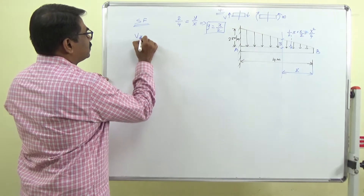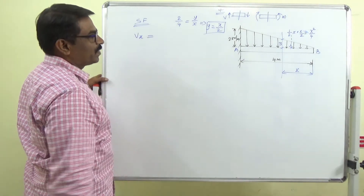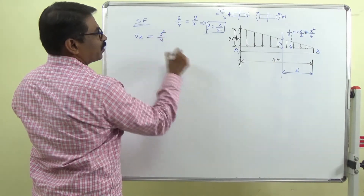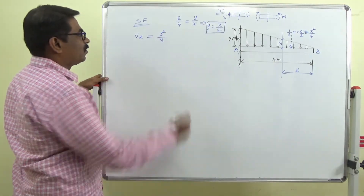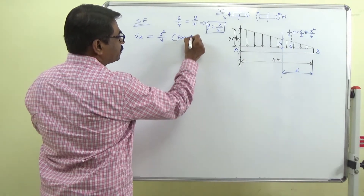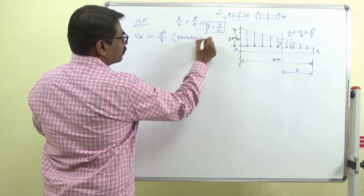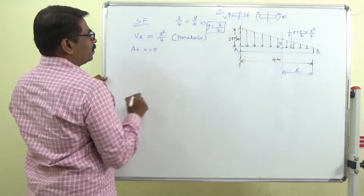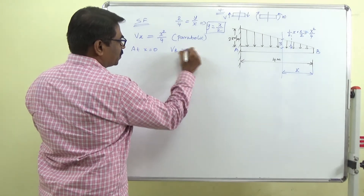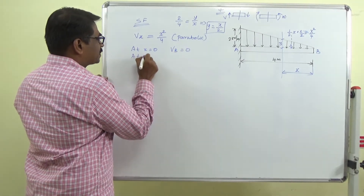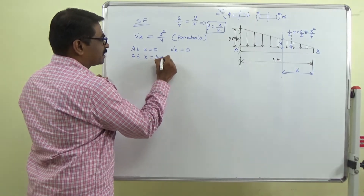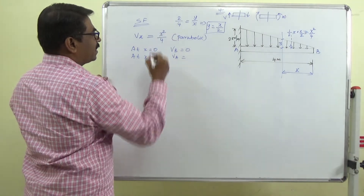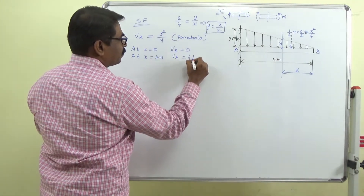The shear force Vx at section x equals x²/4, acting downward. The variation is parabolic. At x = 0, V = 0. At x = 4 meters (at support A), V = 4²/4 = 4 kN.